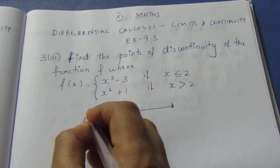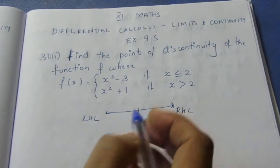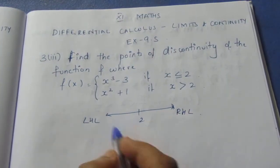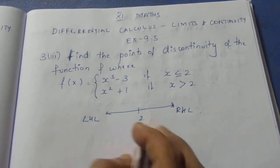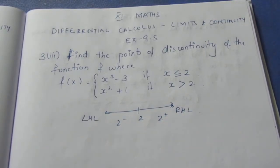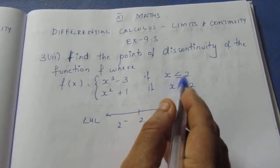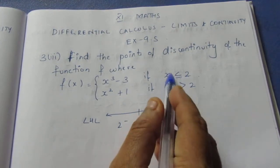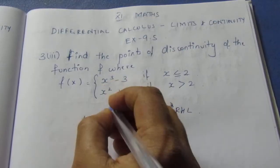This is the left hand limit and this is the right hand limit. We have 2 minus, which is less than or equal to 2, and 2 minus is to the right hand side. That's why we consider x less than or equal to 2 — then x is less than or equal to 2.